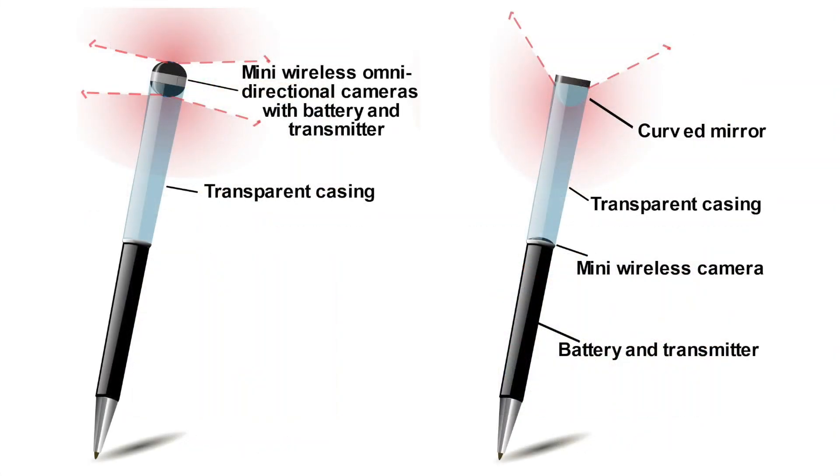Finally, here are two ideas for future PenSight designs using mini wireless cameras and transparent pen barrel that address weight and occlusion issues of the current prototypes.